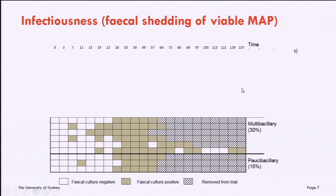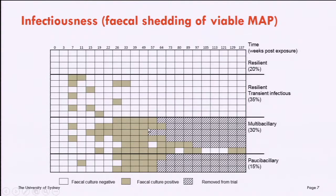Looking at infectiousness, I'm showing a timeline in this grid chart where colored boxes indicate a positive fecal culture and hashed boxes show animals that were necropsied. The diseased animals mostly became persistent shedders, shedding bacteria every month at the later stages. Interestingly, we had a group of 11 resilient animals that were uninfected at two and a half years. Within that group, just four animals showed no detectable shedding at any time point, while others were transient shedders — shedding very early on, then nothing.